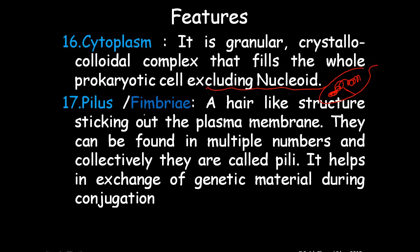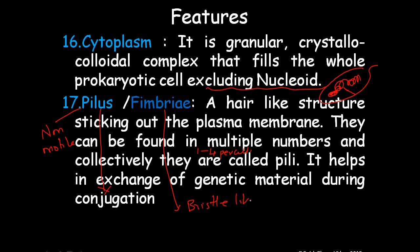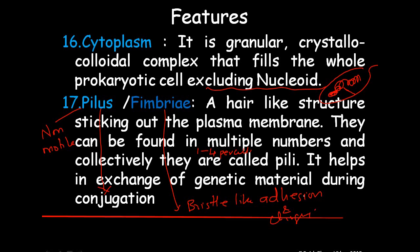Pilus or fimbriae is a hair-like structure sticking out of the plasma membrane. They are non-motile and can be found in multiples — around 1 to 4 per cell — and collectively they are called pili. Pilus helps in the exchange of genetic material through conjugation. Fimbriae are more bristle-like and help in adhesion and clinging of the bacteria to surfaces. This is the slight difference between pilus and fimbriae.